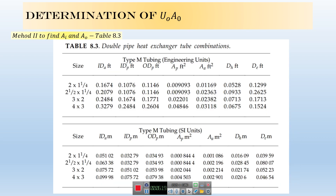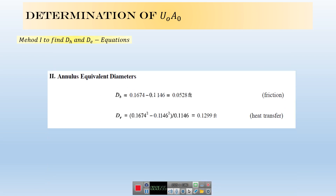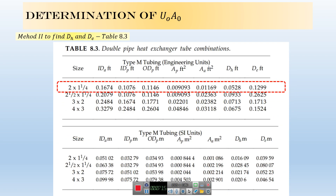You also need to find the hydraulic equivalent diameter. If you use Table A3, you can just read those values directly. The hydraulic equivalent diameter can also be found from its definition, which we already discussed for double pipe heat exchangers. Now you have all dimensions — areas, diameters, and flow areas.